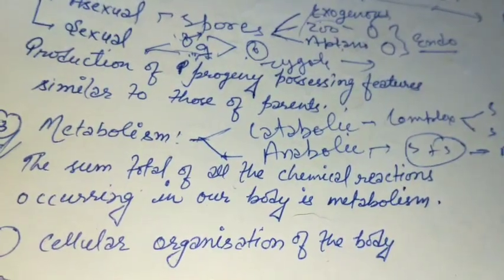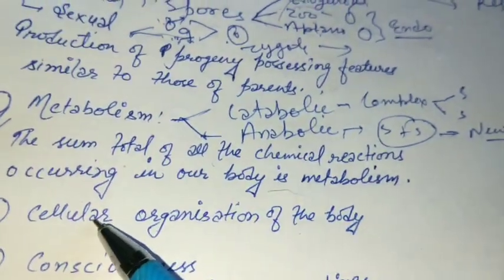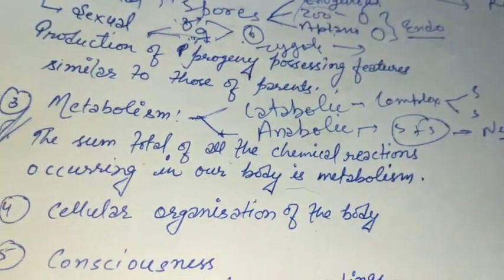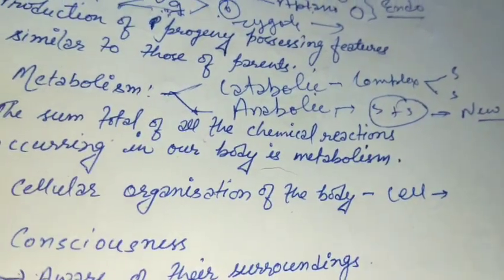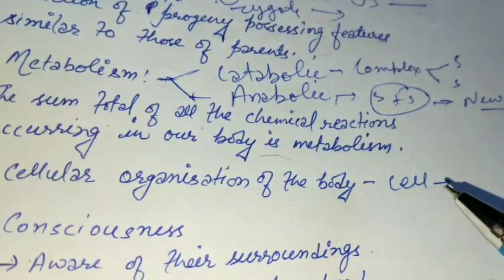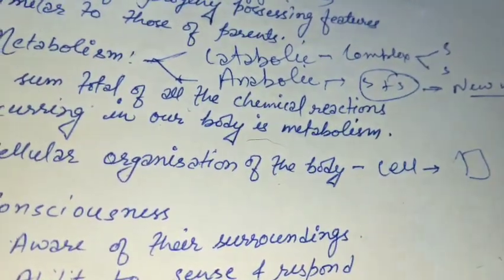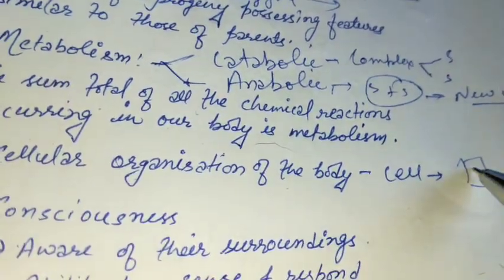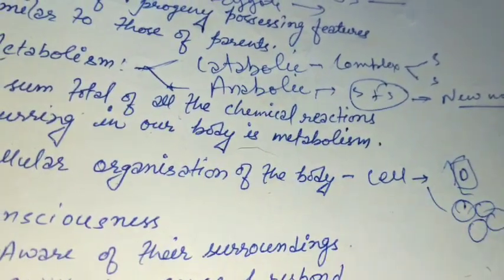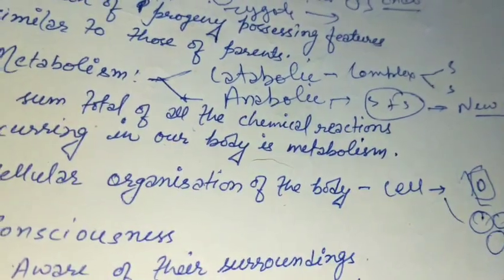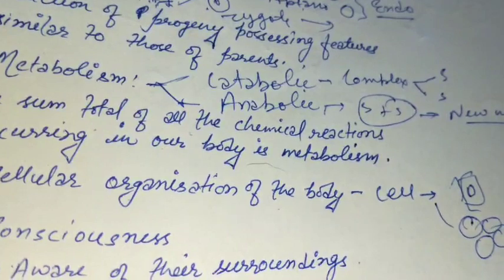The next characteristic of living is cellular organization of the body. The cell is the basic structural and functional unit of life. Each living organism is made of one or many cells. In a unicellular individual, a single cell is a single individual, while in a multicellular individual, many cells together constitute a living organism. Metabolic reactions also take place within these cells.